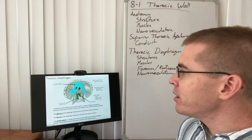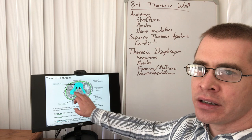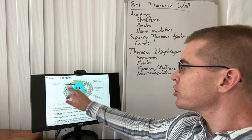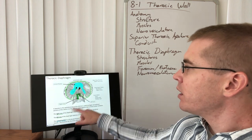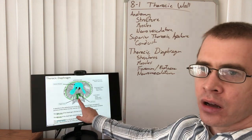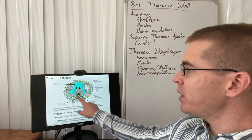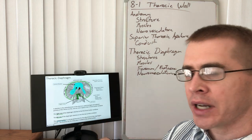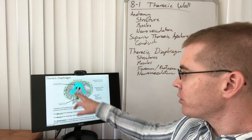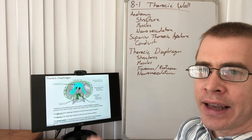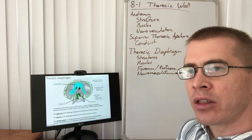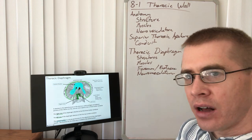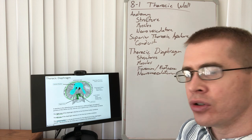The diaphragm has a central tendinous portion with no musculature and a surrounding muscular portion. The muscular portion is attached to the vertebrae posteriorly by what are called crura — a right crus and a left crus. There are also foramina and hiatuses within the diaphragm that allow passage of the aorta, the vena cava, the esophagus, and other structures traveling from the thorax into the abdomen.